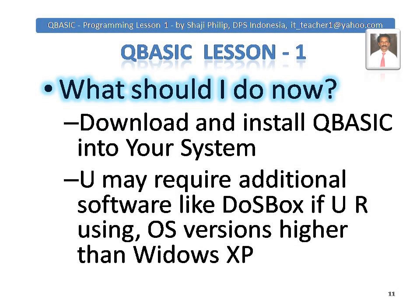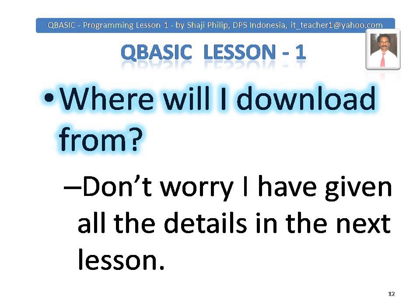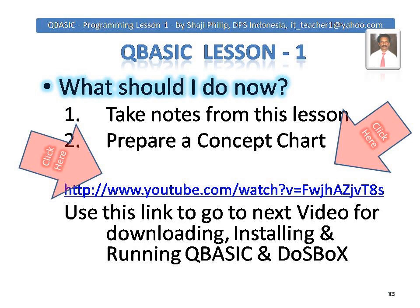Now, you have to install QBasic into your system. If you are using a Windows operating system higher than Windows XP — most probably Windows 7, 8, Vista, or Windows 10 — you may have to use DOSBOX. In that case, download DOSBOX and install it. Don't worry about where to download it; I will give the details in the next lesson. Take notes from this lesson and prepare a concept chart to make the concept clear in your mind. For downloading, you can follow the link I have provided — it is a YouTube video link I have already uploaded. It gives all the details on where to download, how to download, and how to install. You can copy and paste or simply click on the link given on the YouTube video description to watch it, follow the instructions, and then download and install QBasic as well as DOSBOX.